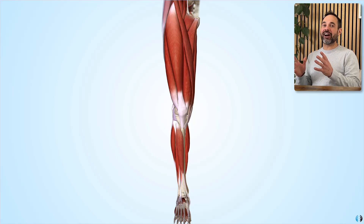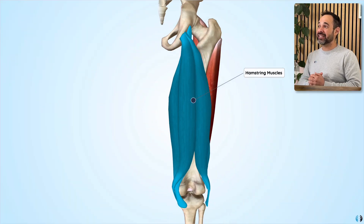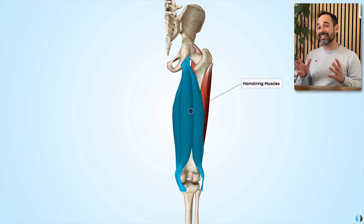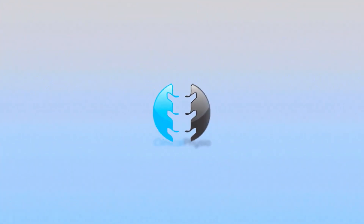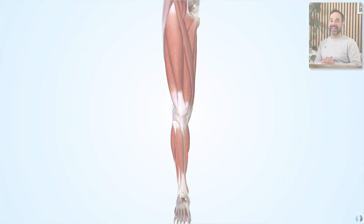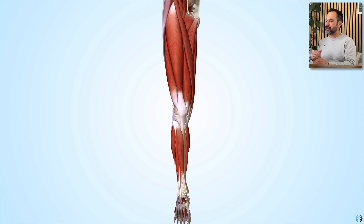So everyone, in this video we're going to guide you through the key muscles of the knee joint. We're going to look at muscles such as the quadriceps, as well as key muscles like the hamstrings, as well as other muscles that assist in the movement of this joint. If you're ready to learn anatomy, let's dive in. Hey everyone, Khalid here. Welcome back to Clinical Physio. Let's dive into the anatomy of the knee joint.